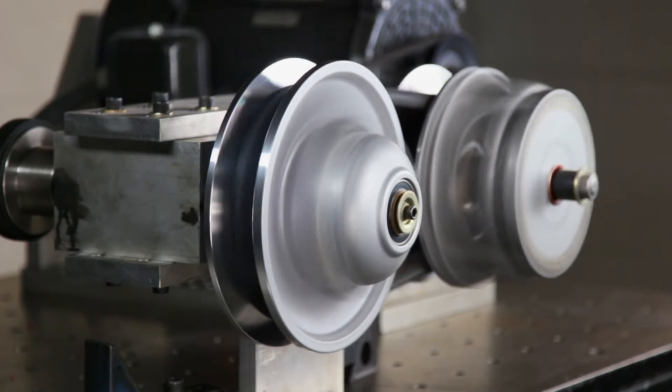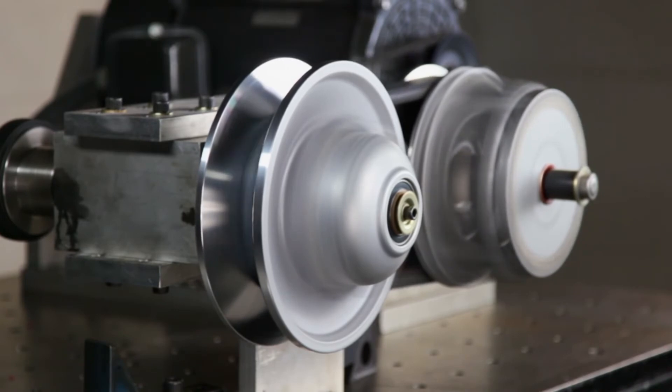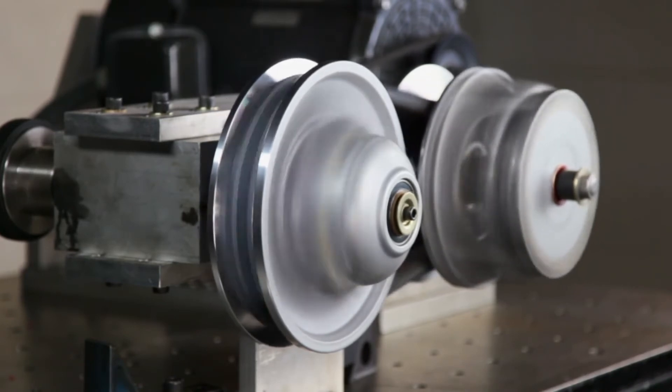When the throttle is reduced, the belt pinch at the primary is reduced and the secondary clutch compression spring forces the secondary sheaves closer together. The vehicle decelerates.